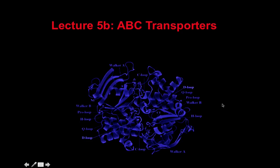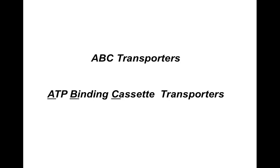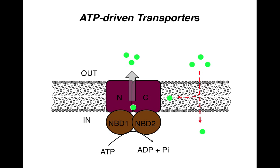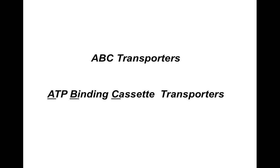Today I'm going to be talking about active transport and ABC transporters. ABC transporters are ATP binding cassette transporters — they contain an ATP binding cassette which can bind and hydrolyze ATP, and it is the ATP that provides the energy for substrate efflux or influx. ATP-driven transporters are driven by the hydrolysis and binding of ATP.